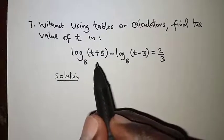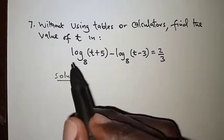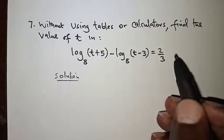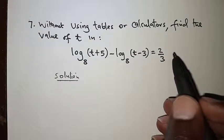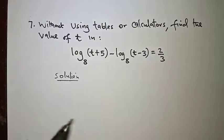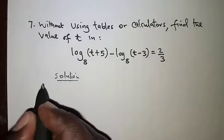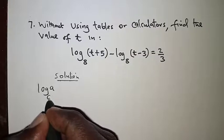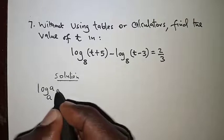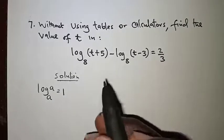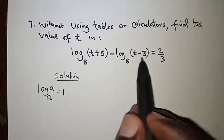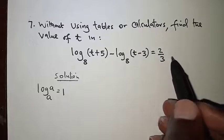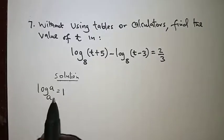The first thing I want us to identify is that for each and every term on the left hand side, we have them expressed in terms of logarithms to base 8, while that is missing on the right hand side. So we need to introduce logarithms on the right hand side. We are going to apply the law that says logarithm of a to base a — where the base is the same as the value — equals 1. Since we have logarithm to base 8, we need to introduce logarithm to base 8 on the right hand side.